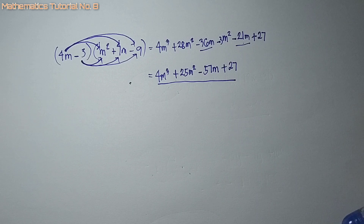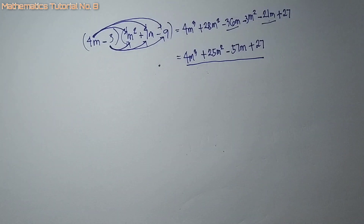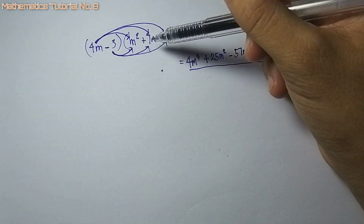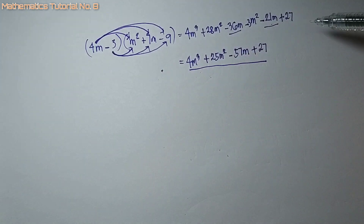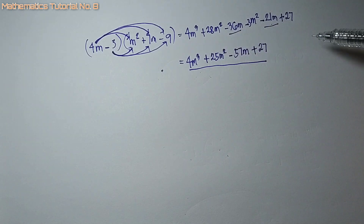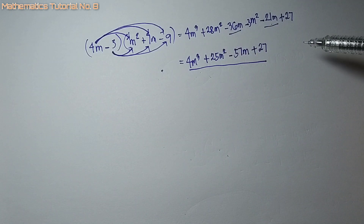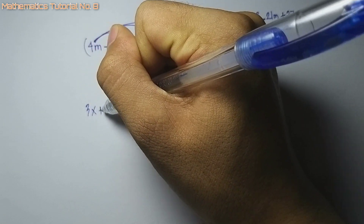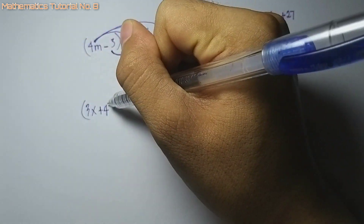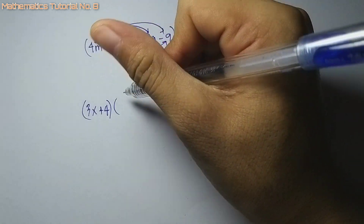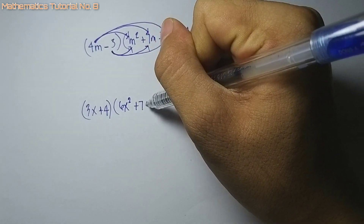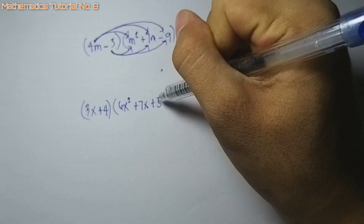Okay so mas taas ang solusyon pag daghan na ang terms sa polynomial. Mas daghan na terms ang atong polynomial, mas taas ang atong solusyon, kahit mas daghan ang terms na atong i-multiply. So let's have another example: 3x plus 4 i-multiply sa 6x squared plus 7x plus 5.